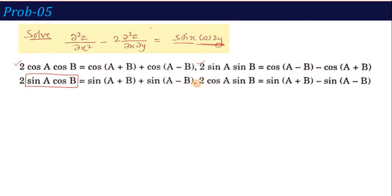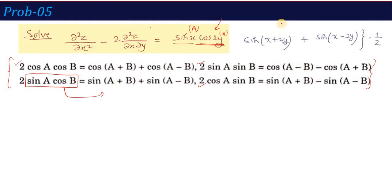Applying the formula to this question: sin(x)cos(2y) = [sin(x + 2y) + sin(x - 2y)] / 2. Here a = x and b = 2y. So sin(a+b) = sin(x + 2y) and sin(a-b) = sin(x - 2y), divided by 2. Both terms are now in the standard AX plus BY form.